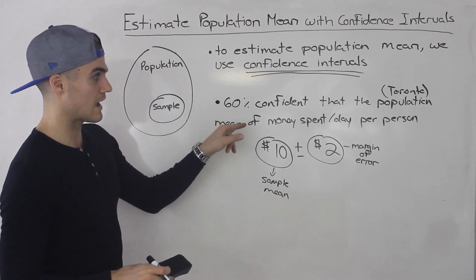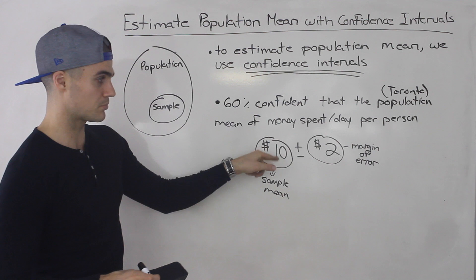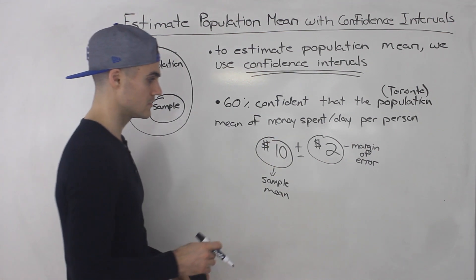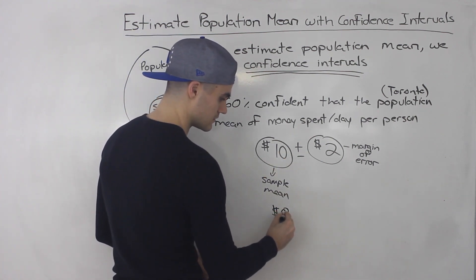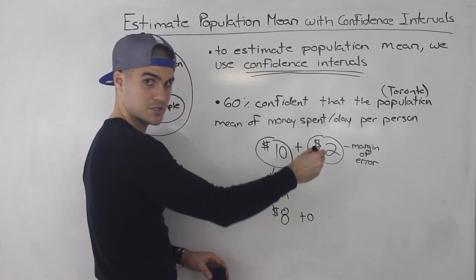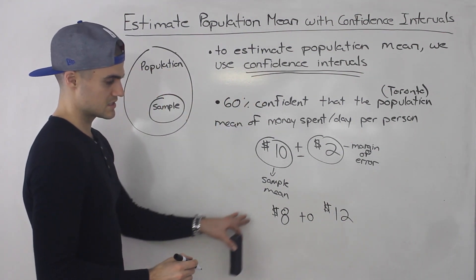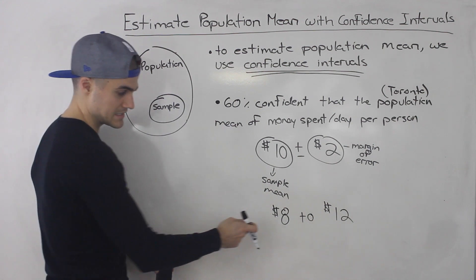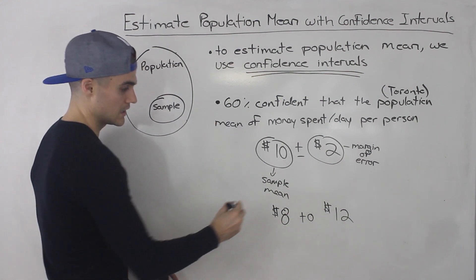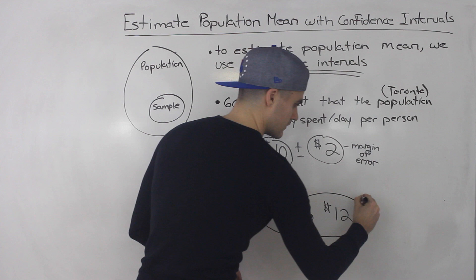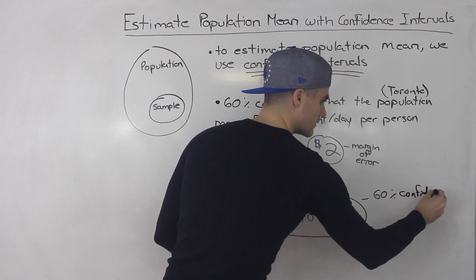So we could be 60% confident that the Toronto mean of money spent per day per person is $10 plus or minus $2. And if we were to make this into an interval, $10 minus $2 gives us $8, and $10 plus $2 gives us $12. So we could be 60% confident that the population mean is going to be somewhere between $8 and $12 — this is called a 60% confidence interval.